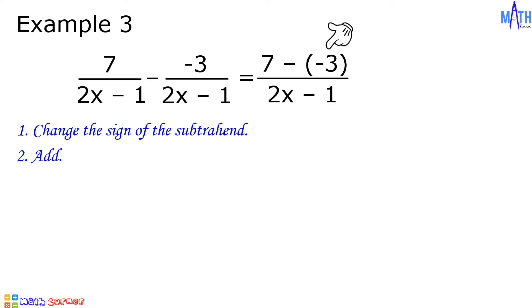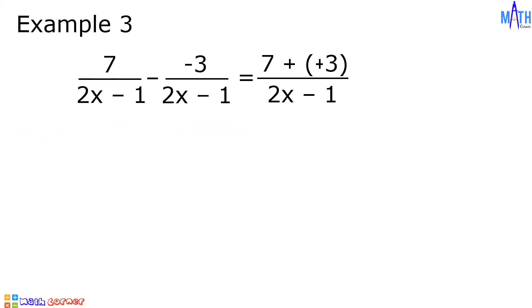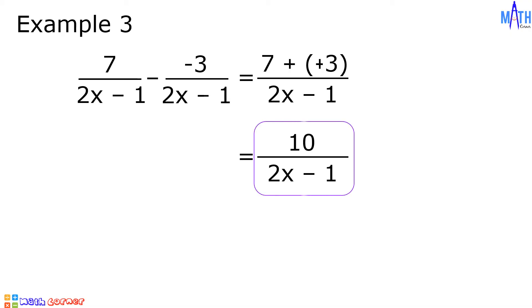Change the sign of the subtrahend. From negative 3, it becomes positive 3. And then proceed to addition. 7 plus positive 3 is equal to 10. So we have 10 over 2x minus 1. And since it is already expressed in lowest term, this is the final answer.